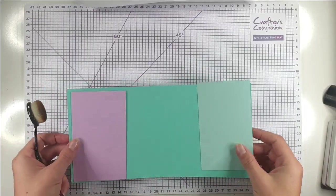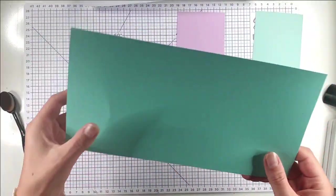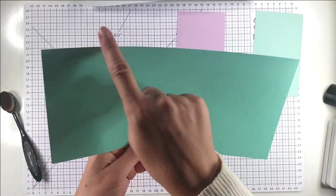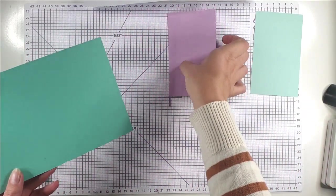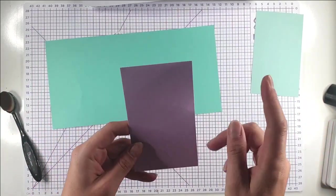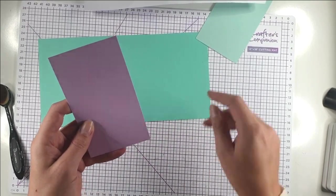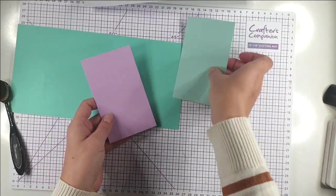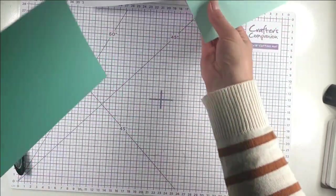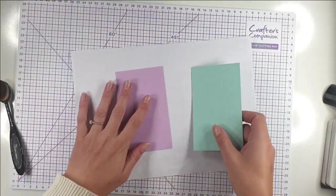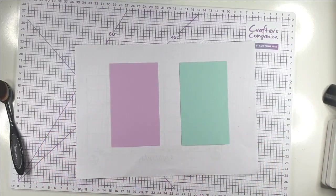For my next card, I'm going to create a wraparound card. This piece of cardstock is five and a half inches by eleven inches in Coastal Cabana. This piece measures three and an eighth by five and a quarter in Fresh Freesia, and this one's the same size in Pool Party, both from Stampin' Up. The first thing we're going to do is use the stencil from our set to add detail.